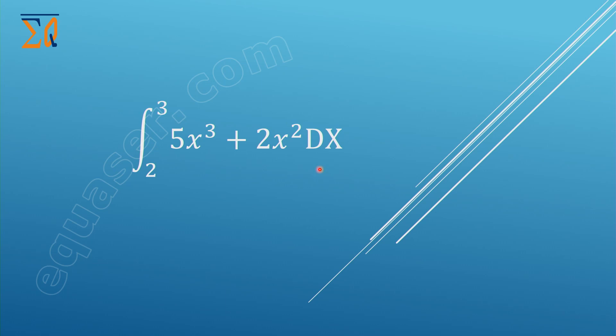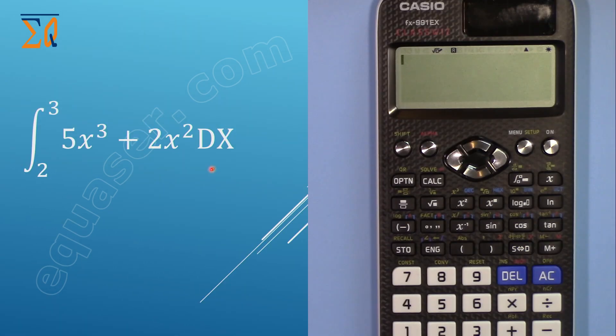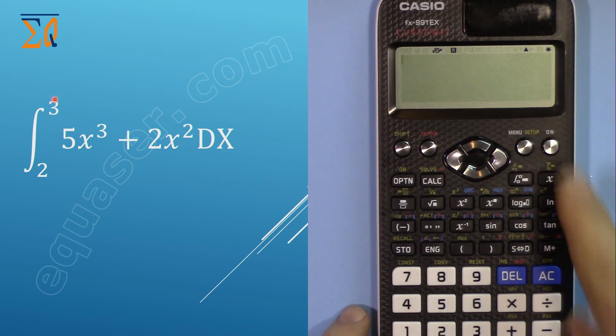Let's say I have here an integral of 5x³ + 2x² dx from 2 to 3. This function takes the integral and then plugs in these two values, the two bounds from 2 to 3, and evaluates it. Make sure your calculator is on.